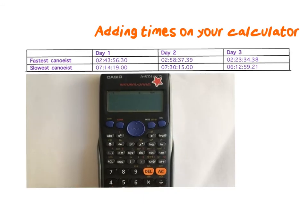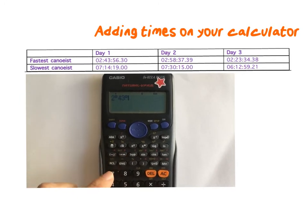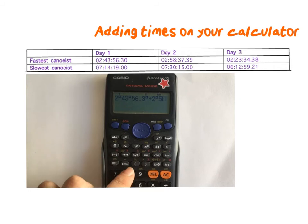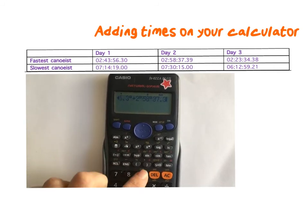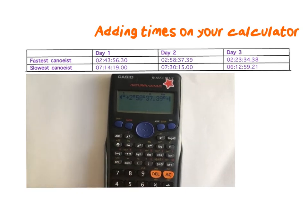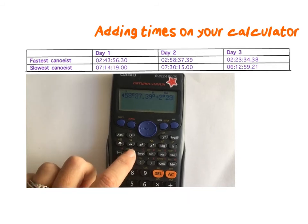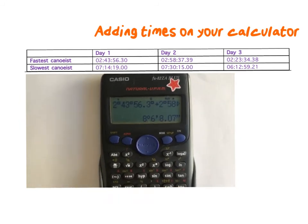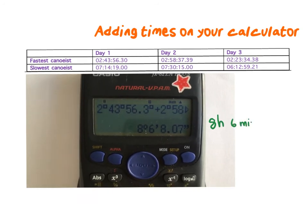So on your calculator, you would also use the degrees, minutes, seconds button, and you would say 2 hours, 43 minutes and 56.3 seconds. Pressing that degrees, minutes, seconds after each of those categories. So after the hours, the minutes and the seconds that you type in. So adding them all up like that, pressing the button, the degrees, minutes, seconds button after each of those numbers, you also get the total of 8 hours, 6 minutes and 8.0 seconds. Now, although it shows degrees, minutes and seconds on your calculator, remember that you are just using this button to help you work with hours, minutes and seconds. So remember to not make those little symbols when you write down the answer, but you write it as hours, minutes and seconds.